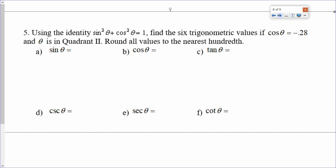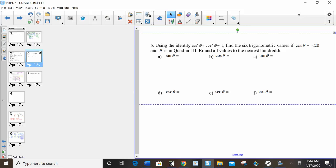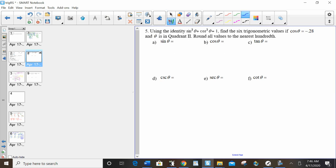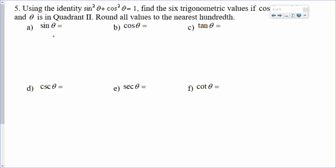Using the identity sine squared plus cosine squared equals 1. Find the 6 trig values. So this is called the Pythagorean identity. It's a different method for finding the 6 trig functions. So let's do it.